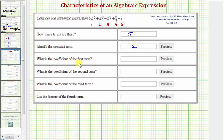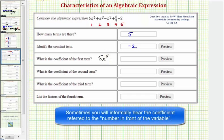Next we're asked to identify the coefficient of the first term. Notice the first term is five x to the fifth. A coefficient is a number used to multiply the variable. So notice in this case, five x to the fifth means five times x to the fifth and therefore the coefficient is five. So we can think of the coefficient as the number factor of the term.